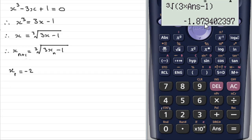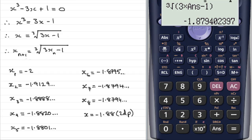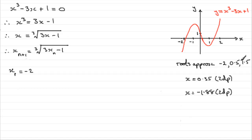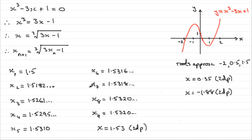It converges to minus 1.88 to two decimal places. Here's the result of all those iterations — so we now have that this root is going to be equal to minus 1.88 to two decimal places. So we've now got two of the roots and we just want the remaining one. If we try putting 1.5 in for x1 using the same iteration, it converges to a fixed value. The iterations converge to 1.53 to two decimal places. So we've got our third and final value: x equals 1.53 to two decimal places.